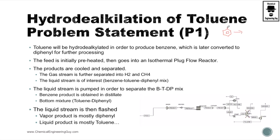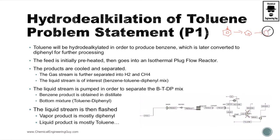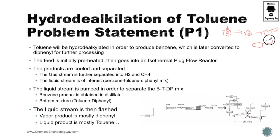What we want to do in the first step is to remove this methyl group to get benzene, with a byproduct produced. Then this benzene will react with another benzene to form a ring joined by one bond — this is the diphenyl.